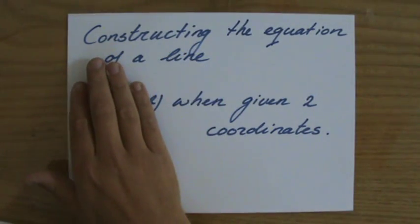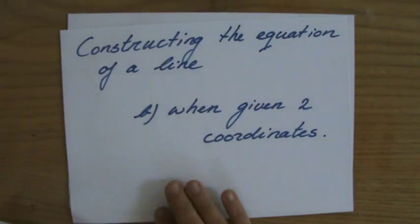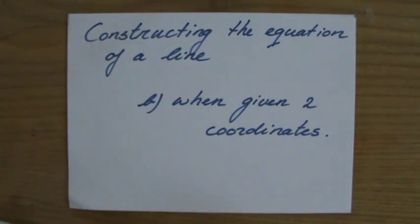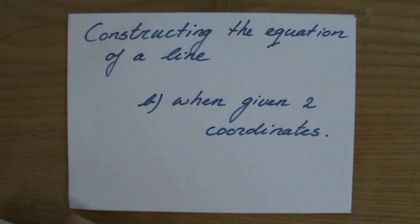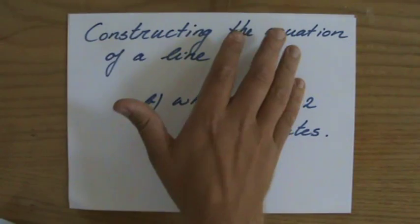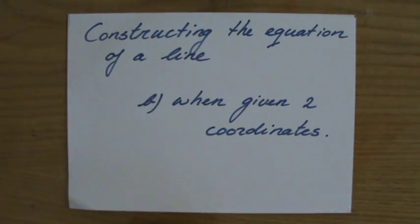Good morning. We are still constructing equations of lines, of linear equations, and we have done it already while looking at a line. But now we are going to look at how we can construct an equation of a line when we are only given two coordinates.